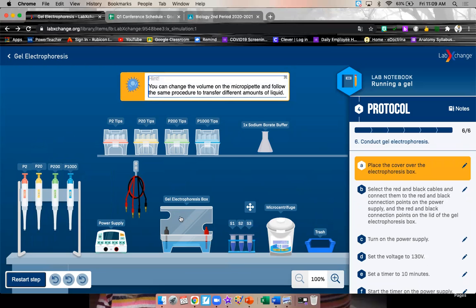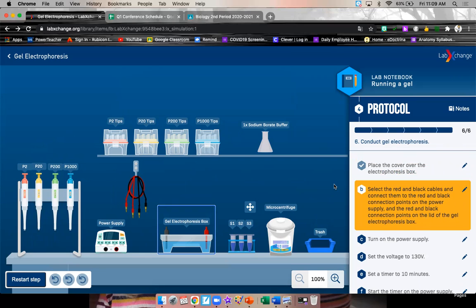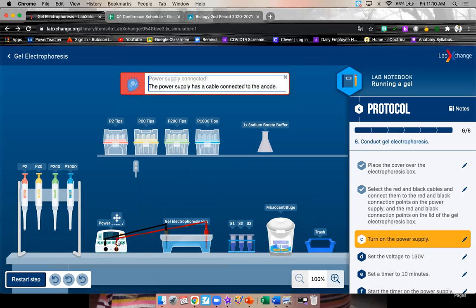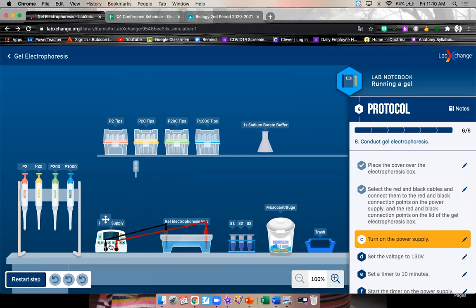Place the cover over the box and select the red and black cables and connect the red and black connection points on the power supply and the red and black connection points on the gel electrophoresis box. Grab this red one and put it in this red slot and I'll put it in this red slot. Grab the black one, put it in this black slot and I'll put it in this black slot.